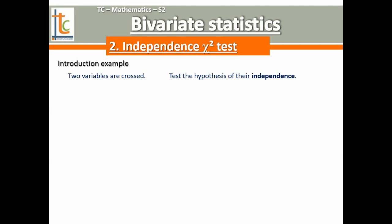As you can see, chi-square refers to a Greek letter, chi, that could be written C-H-I: chi-square test — that is its name.